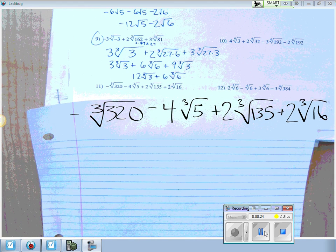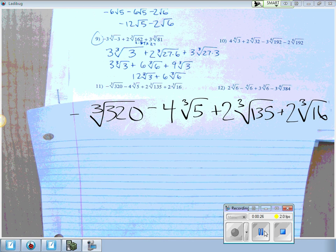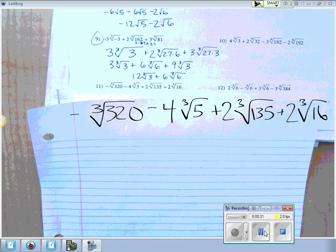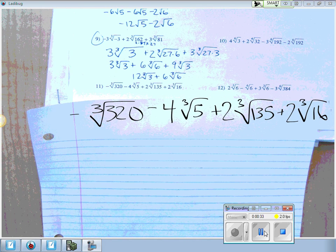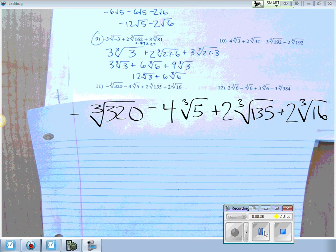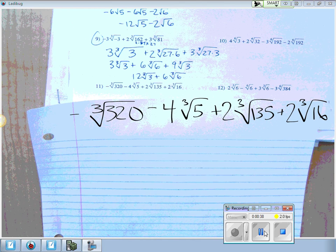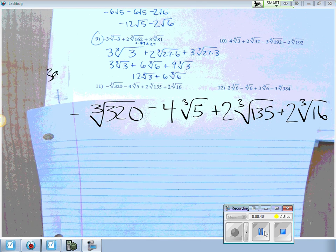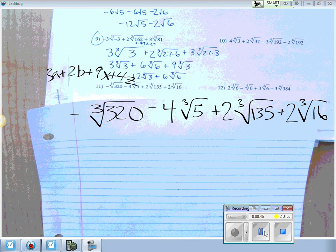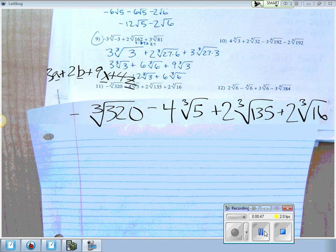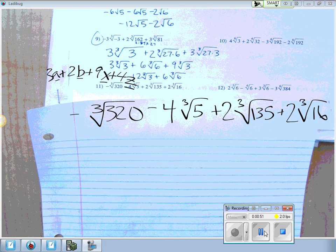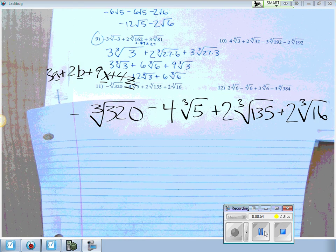So first of all, easy question, are 320, 5, 135, and 16 the same number? No, that's a very easy question. So are you allowed to just go ahead and combine all these? No, it would be like trying to add 3A plus 2B plus 9X plus 4Z. You can't because they're different variables. You can't because they're different radicals. You can't just add them or subtract them. That's part one to understand.